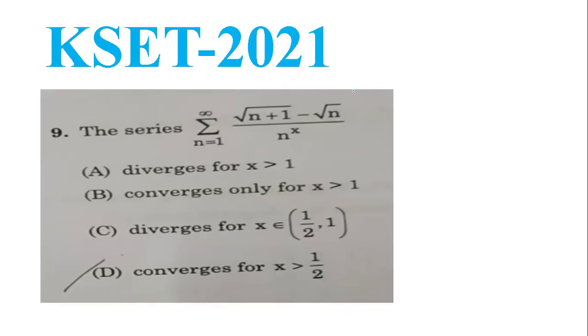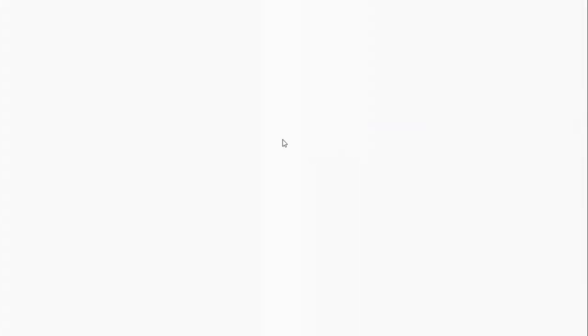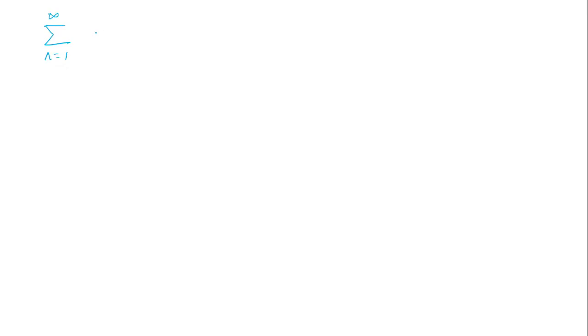Let's discuss the concept. The given series is summation from n equals 1 to infinity of (root(n+1) minus root(n)) divided by n raised to x.